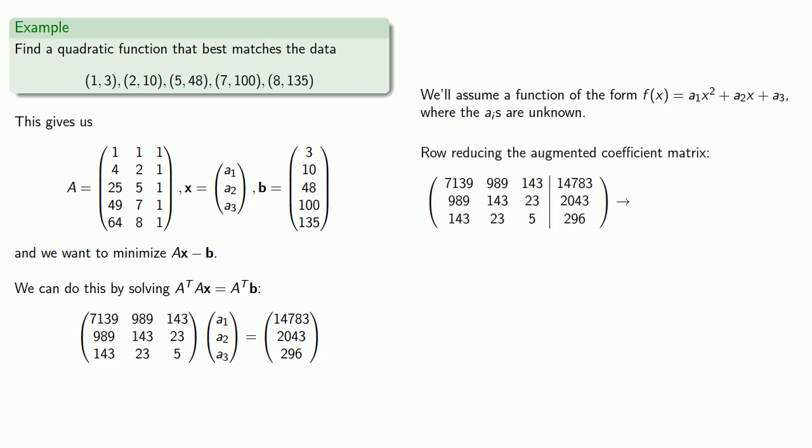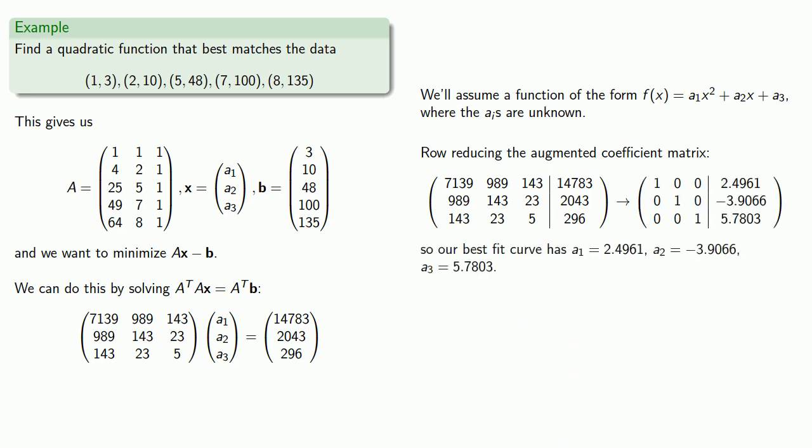Now we can row reduce the augmented coefficient matrix, and that gives us our solutions for A1, A2, and A3. And since those are the coefficients of our best fit function, we can write down our best fit function.